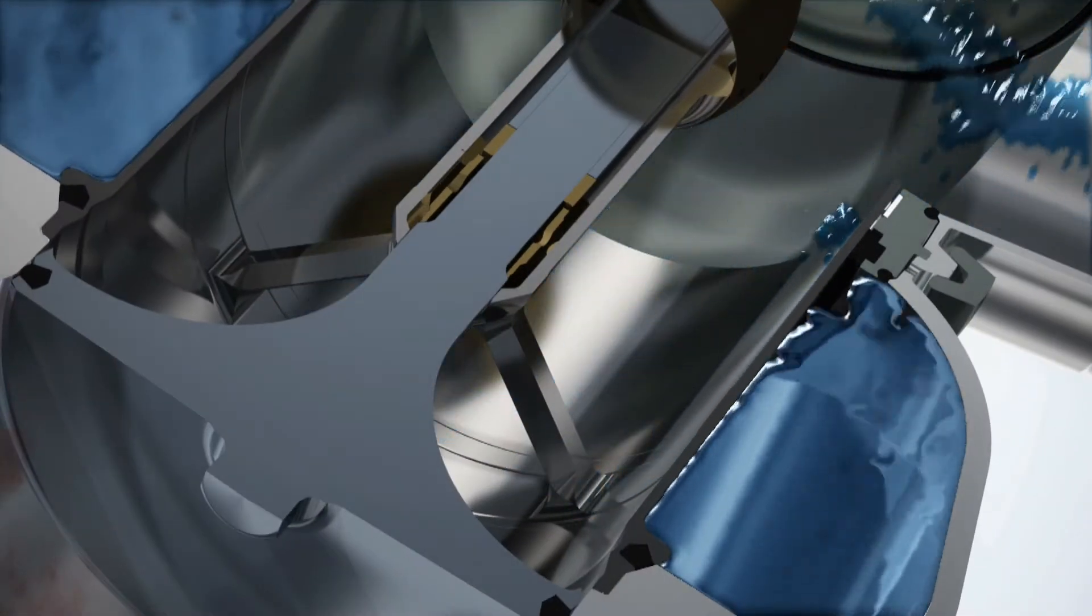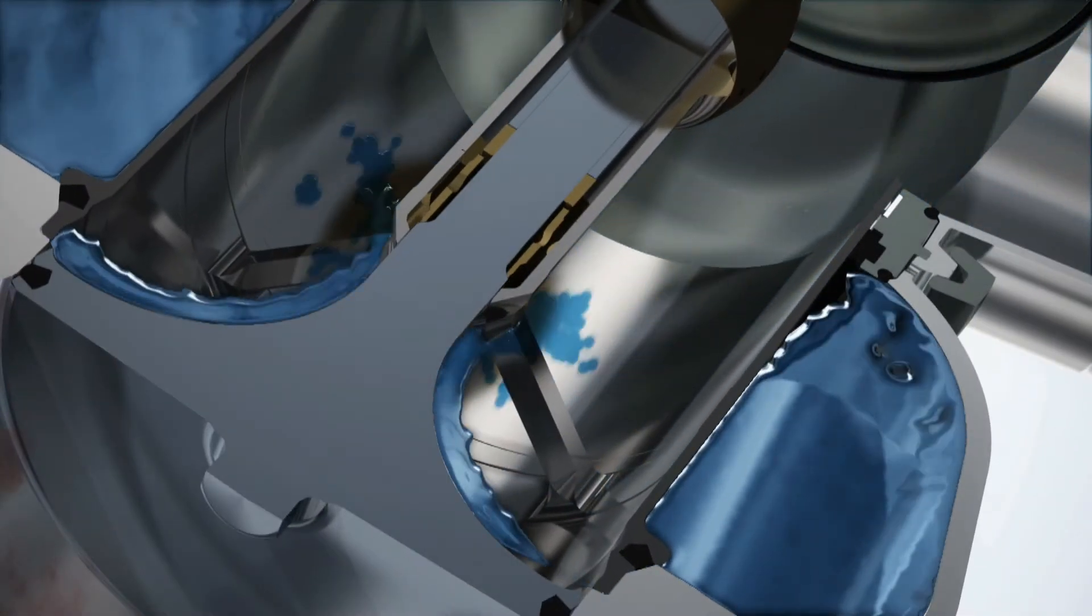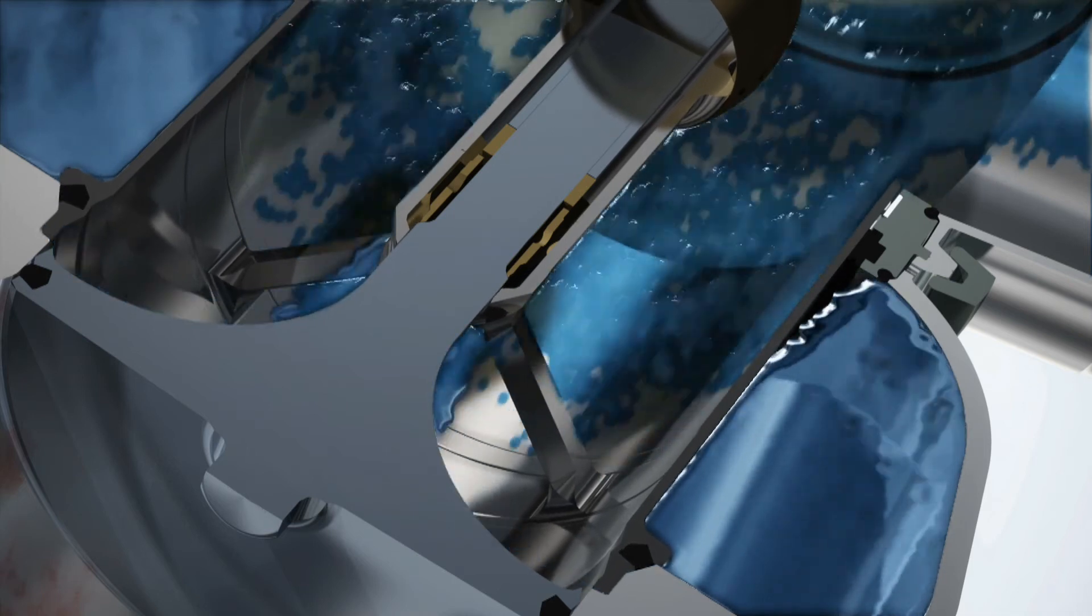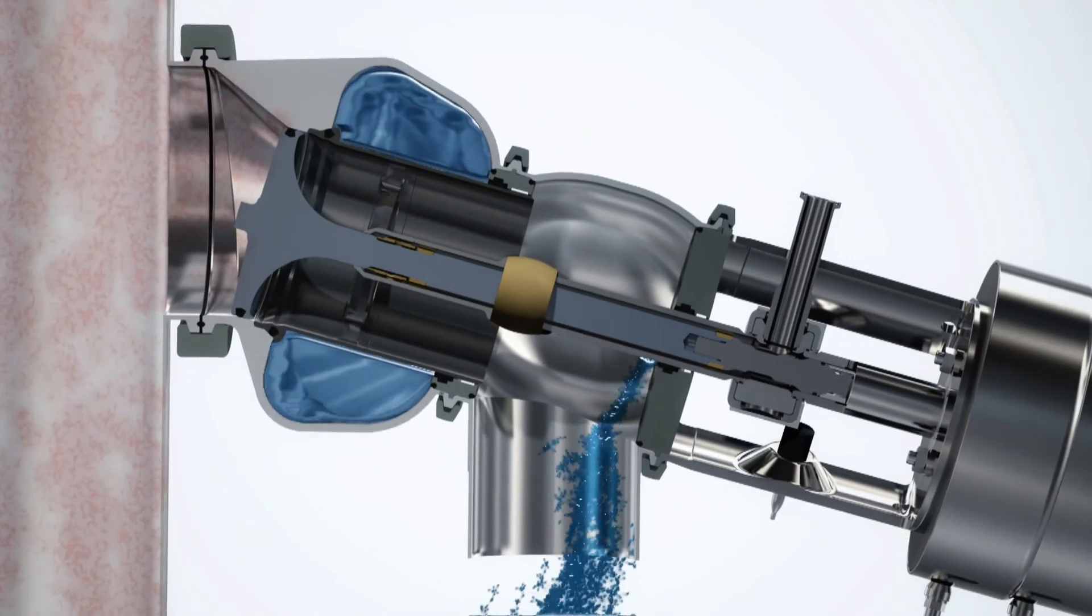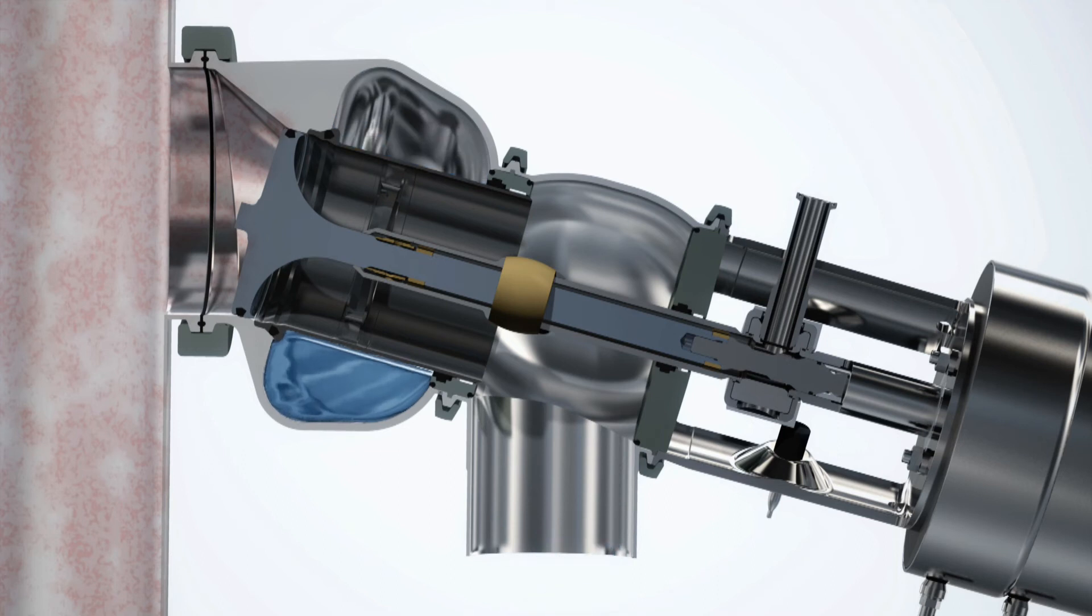While CIP fluid is in the process pipe, a seat lift of the balanced upper plug enables fast and efficient cleaning of the seat and its contact point using minimal CIP fluid.